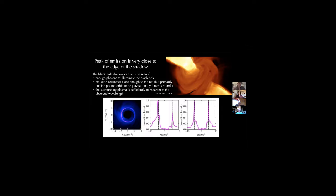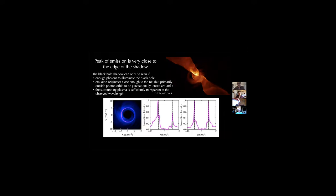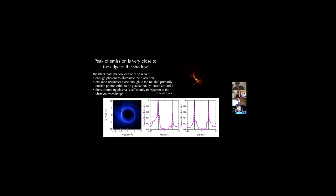Based on simulations and analytic theoretical work, we were able to predict what wavelength the disk would be transparent for these two objects. In this animation, I'm going from one centimeter all the way down to 1.3 millimeters, which is the wavelength that we observe at. As you go to shorter wavelength, the disk becomes transparent, and you can see the black hole shadow — this half circle that remains constant despite all of the other variability.